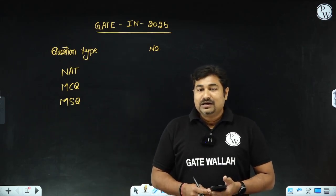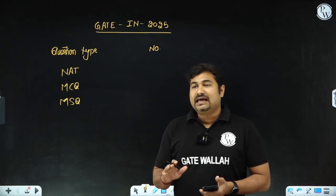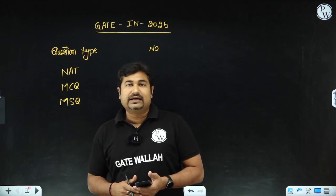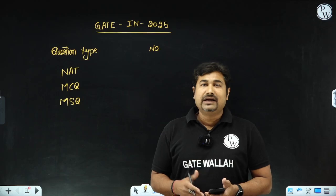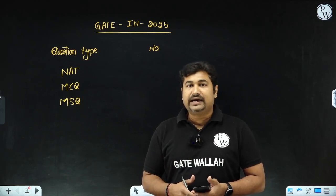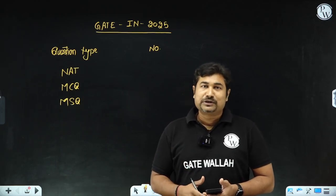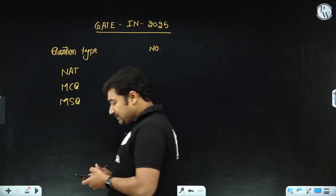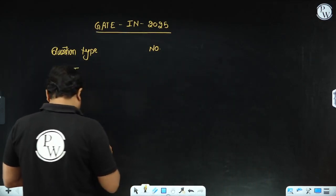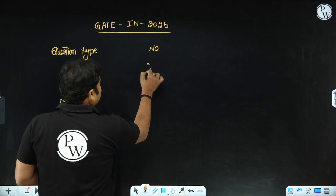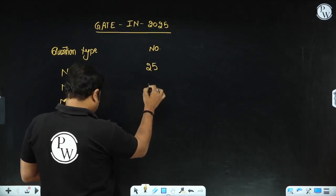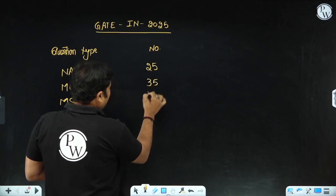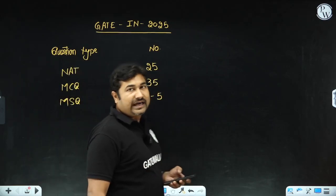The difficulty level I can say is moderate type and your cutoff is also going to be a moderate one. It is nearby 29 to 30 marks and hoping all of you are going to achieve those marks. Please observe, in 2025 NAT type questions are 25, number of MCQ type questions is 35, and 4 to 5 questions are of MSQ type.